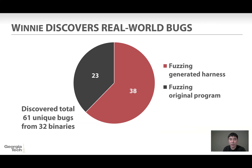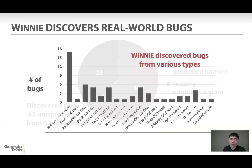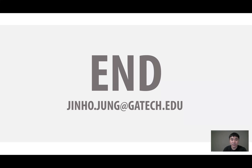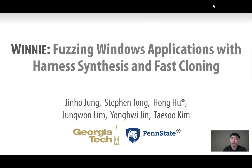Finally, Winnie can discover real-world bugs. Using Winnie, we discovered a total of 61 unique bugs from 32 binaries. We also analyzed the root cause of the problems, and Winnie discovered bugs of various types. Winnie is a toolchain for fuzzing Windows applications with a semi-automated harness generator and a practical fuzzer with a fast process cloning mechanism. We will open-source Winnie to further facilitate Windows fuzzing. Thank you for listening.